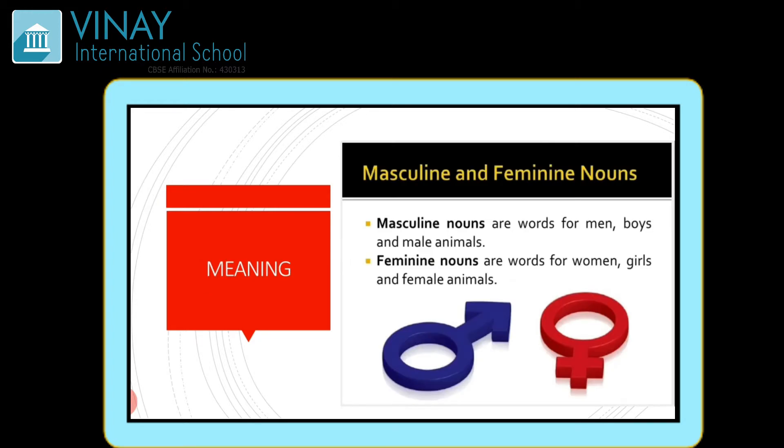Coming to the meaning of masculine and feminine nouns — what is masculine? Nouns are words for men, boys, and male animals. Masculine kya hota hai — masculine data hai words jo hota hai, yaani agar example mein doon aapko, toh ek ladka — ladka is a masculine word. Agar uska feminine — if I ask you — that is ladki. Boy is masculine and girl is feminine. So whichever are the 'he' words are called words of masculine gender.